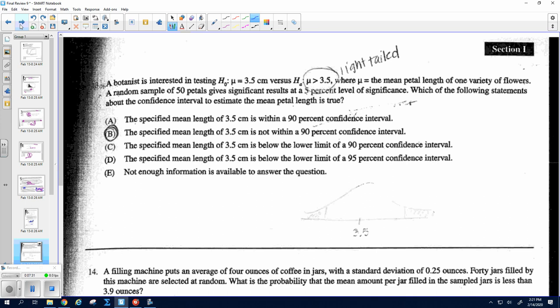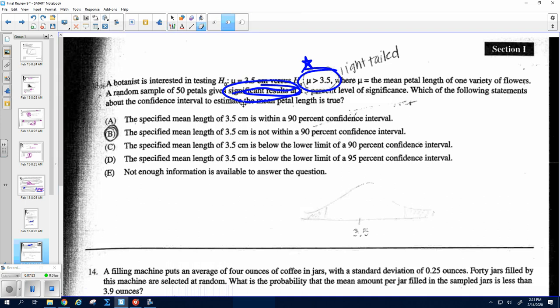Okay, number 13. So which of the following statements about the confidence interval to estimate the mean pedal length is true? If we got significant results at the 5% level, that means that we got that the alternate is true. And if the alternate is true, then it's outside of the confidence interval. And if it's outside the confidence interval, you've got to match it up with what test you're doing. So we have a 5% level of significance. And so this guy is B. The specified mean length of 3.5 centimeters is not within a 90% confidence interval.